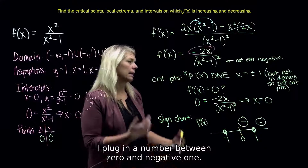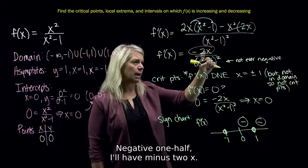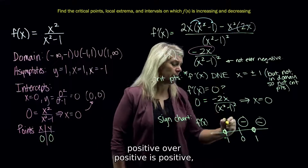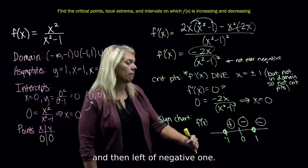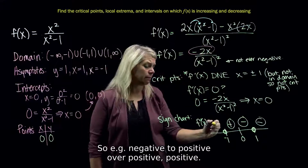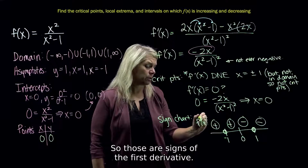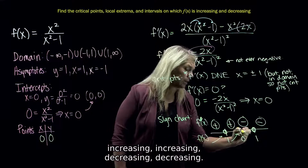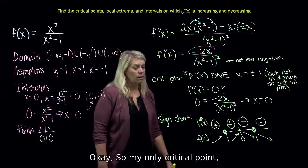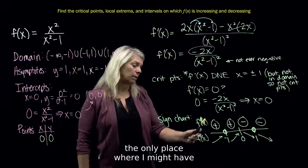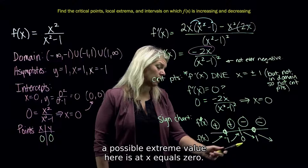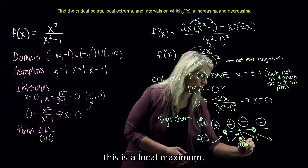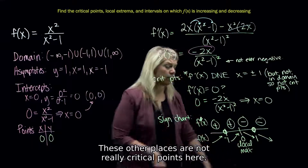Plugging in a number between 0 and negative 1, like negative 1/2: I'll have minus 2x, so negative 1/2 times negative 2 makes the numerator positive. Denominator is positive — positive over positive is positive. Left of negative 1, for example negative 2, I'll have positive over positive — positive. So those are the signs of the first derivative, and that tells me where f(x) is increasing, increasing, decreasing, decreasing. My only critical point and possible extreme value is at x equals 0. Because the function is going up on one side and then down, this is a local maximum. These other places at ±1 are not critical points.